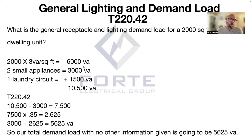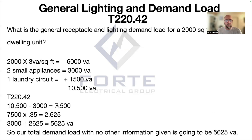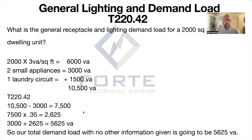Going back to our demand factor: we take 10,500 and subtract 3,000 from that because we apply 100 percent to the first 3,000, leaving a remainder of 7,500. We then take that 7,500 and multiply it by 0.35 — that's your 35 percent from the table — giving us 2,625. We then add the 3,000 back in, and our total demand load is 5,625 VA.